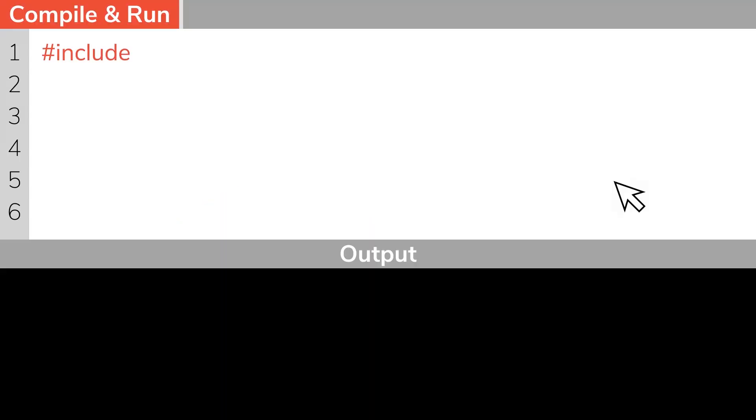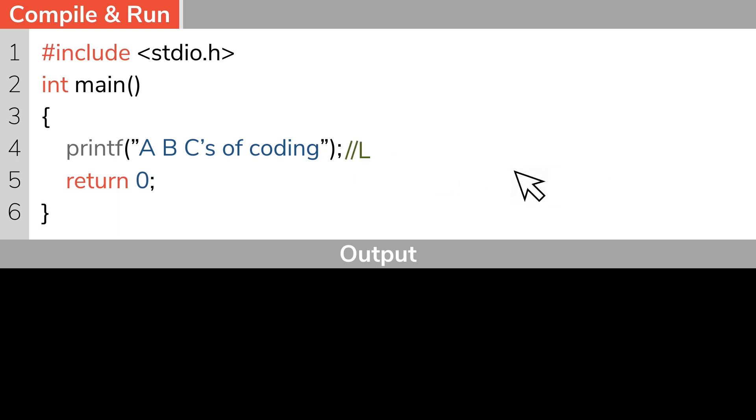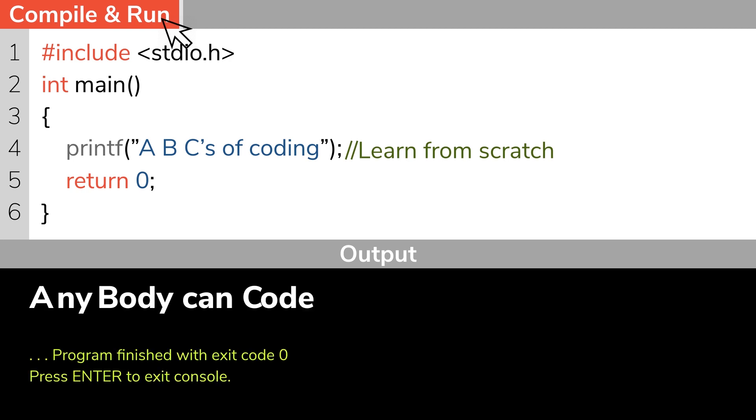Hey guys, I'm Alphonse. Welcome to the 16th episode of Anybody Can Code C Programming Series. If you'd like to take a look at the previous episodes, please use the link in the description. In today's episode, we'll be looking at scope of variables in C.